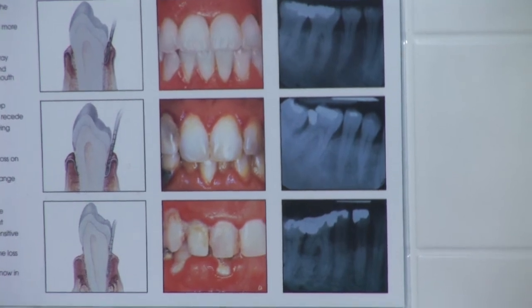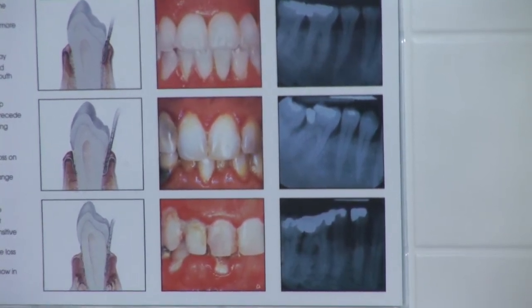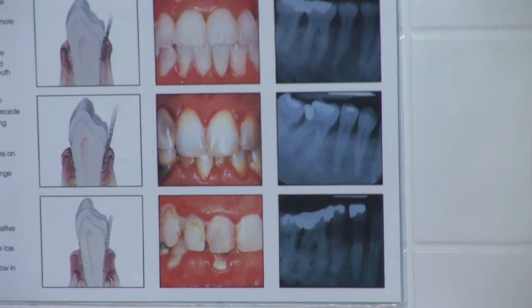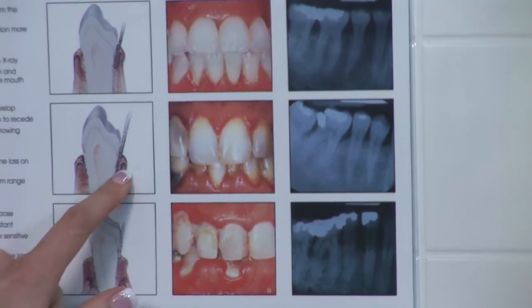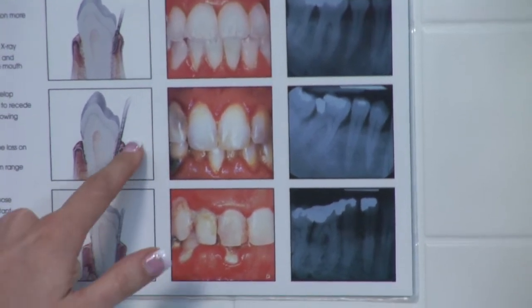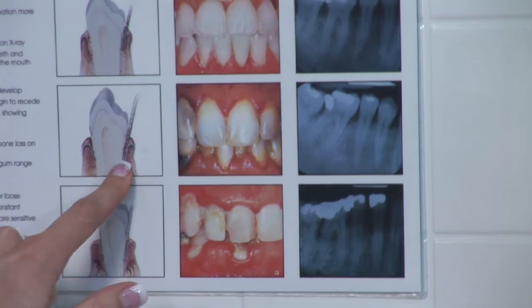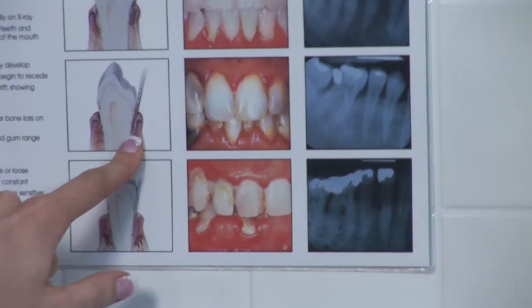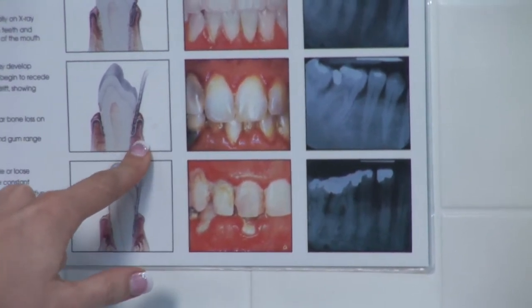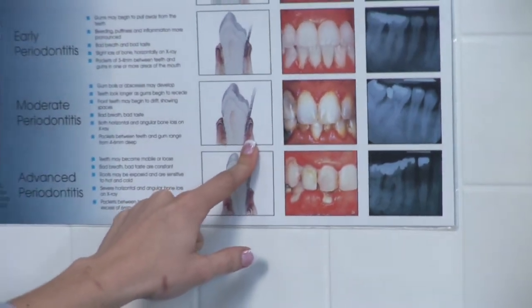Another side effect of moderate periodontitis is extreme bad breath. Also, the pockets in your gums — where they measure the pocketing — become four to six millimeters deep, which is a reflection of bone loss and gum inflammation.